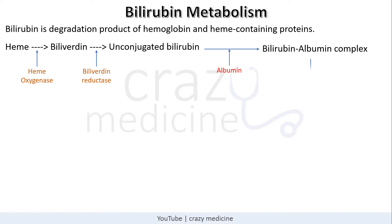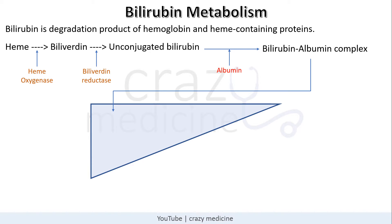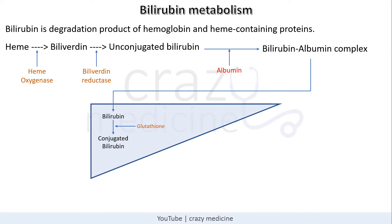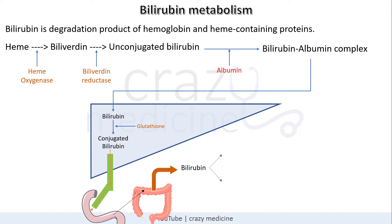When the bilirubin-albumin complex reaches the hepatocyte, bilirubin enters the liver and albumin dissociates. In the liver, bilirubin is conjugated with glucuronide and is known as conjugated bilirubin or direct bilirubin. This direct bilirubin is transported into the second part of the duodenum via the biliary system. From the duodenum, bilirubin is carried to the colon, where it is converted into urobilinogen and stercobilinogen.